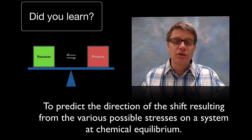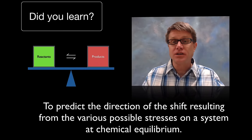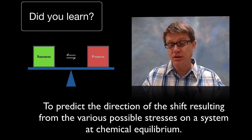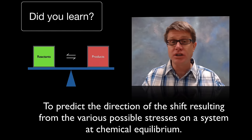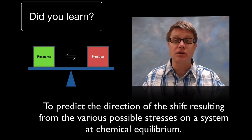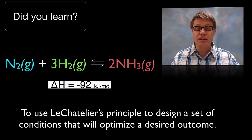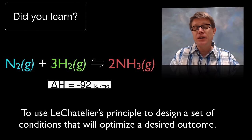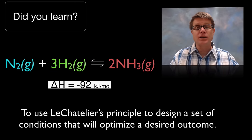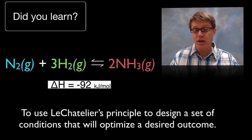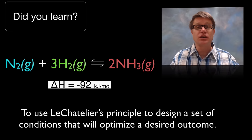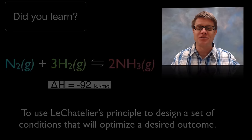Did you learn which way the reaction is going to shift based on disturbances — be it concentration, pressure, or temperature? And given a reaction, could you figure out ways by changing temperature, volume, and concentration to increase percent yield? I hope so and I hope this was helpful.